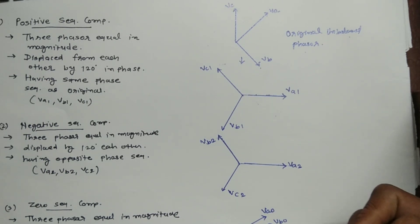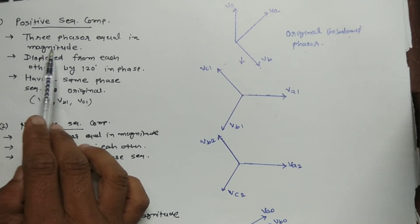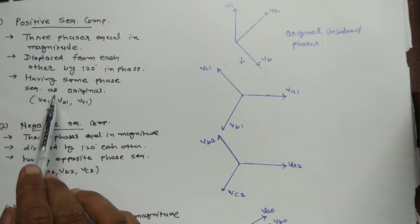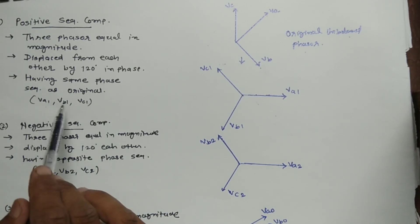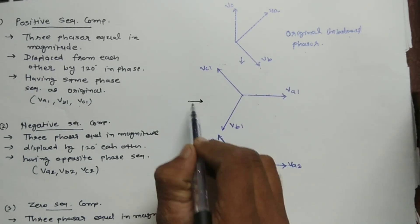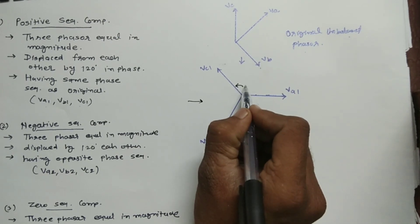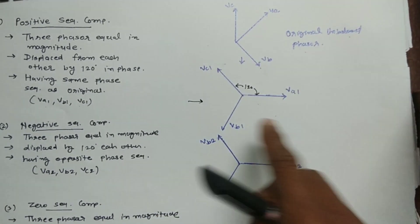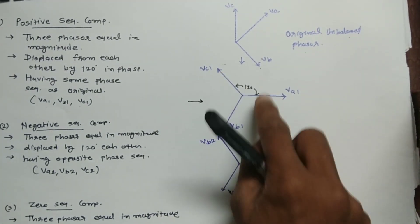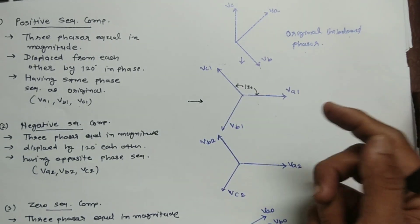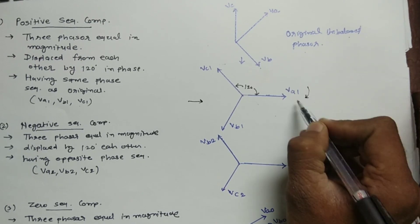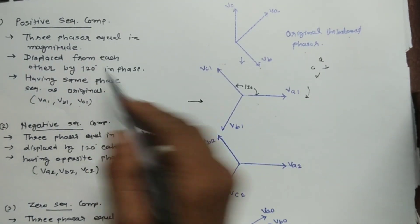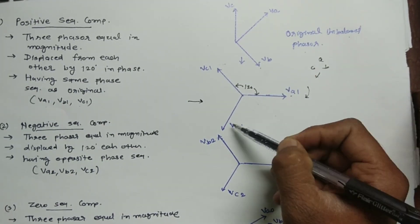Now let us discuss the positive sequence component. The original unbalanced phasors VA, VB, and VC are represented by positive, negative, and zero sequence components. The positive sequence component consists of three phasors equal in magnitude and displaced from each other by 120 degrees in phase, and having the same phase sequence as the original. It is indicated by VA1, VB1, and VC1. In the positive sequence component, all three phases have the same magnitude and each phase is displaced by 120 degrees. The phase sequence is A, B, C — same as the original unbalanced phasor.